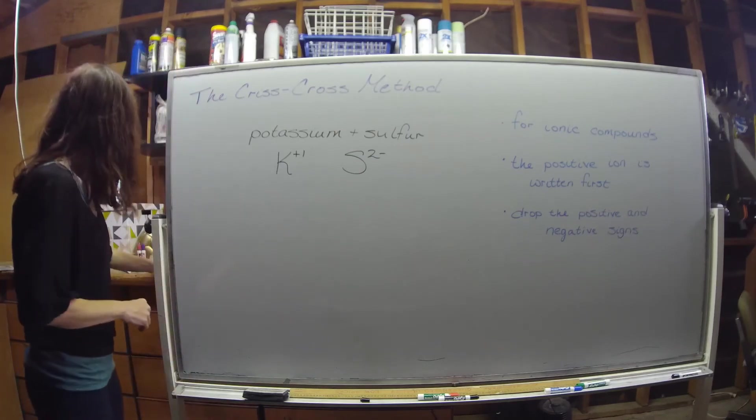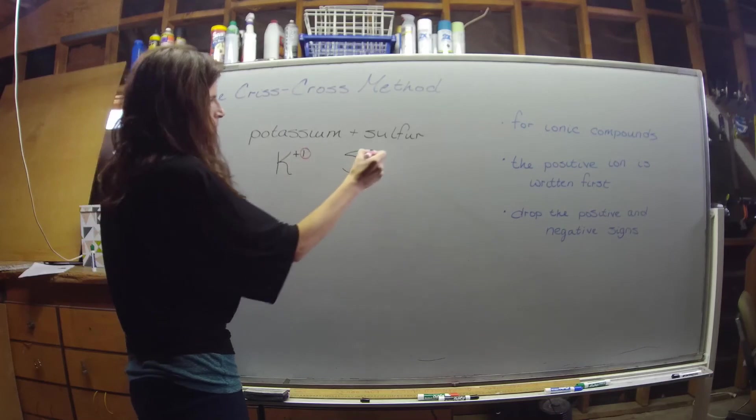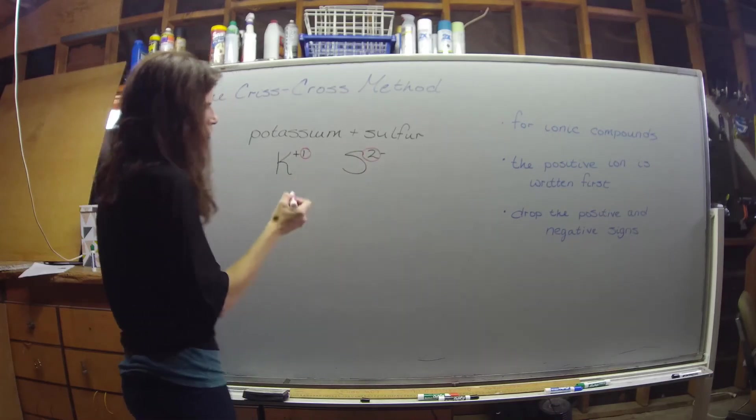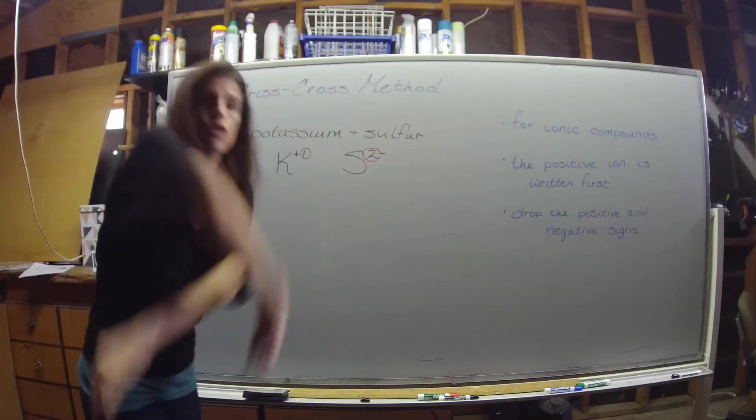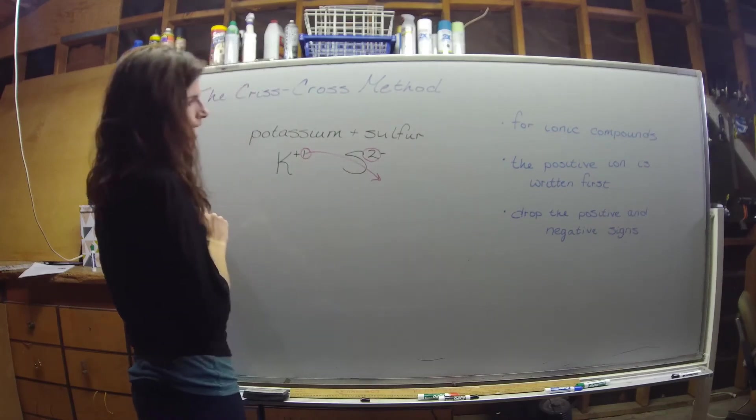How does this work? Grab the charges of the metal and the nonmetal from the periodic table. Potassium's +1 and sulfur's in group 6A so I'm going to do a 2- on that. Always write your positive ion, your cation - that always has to come first. Then you're going to take the charges.